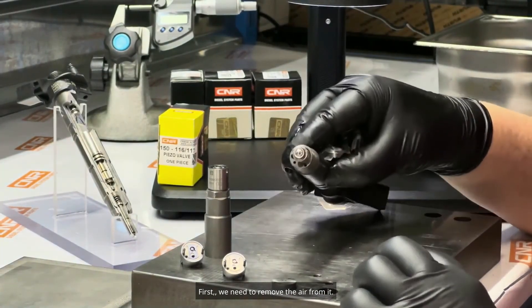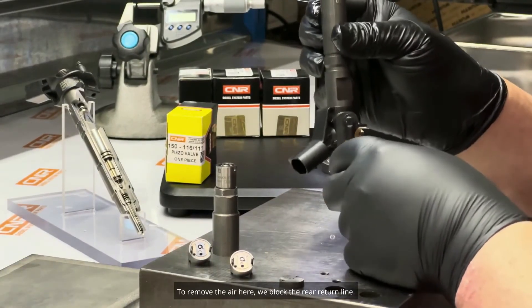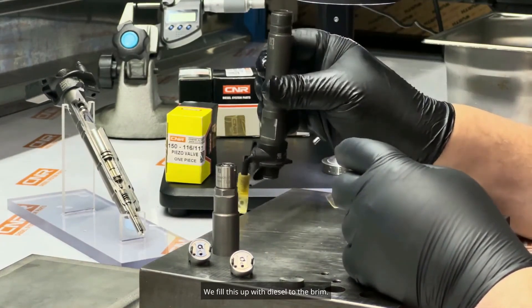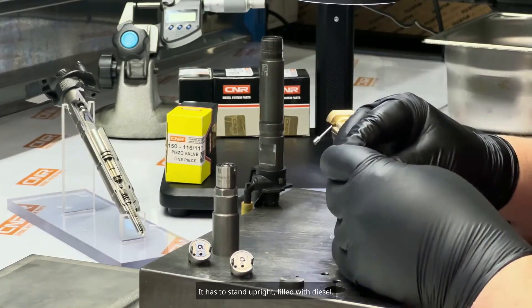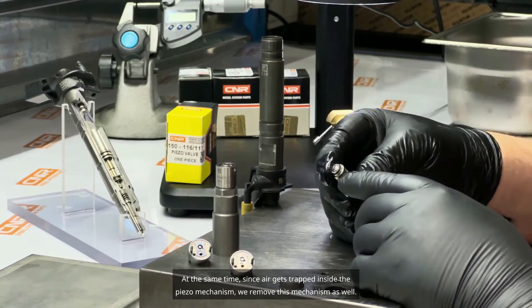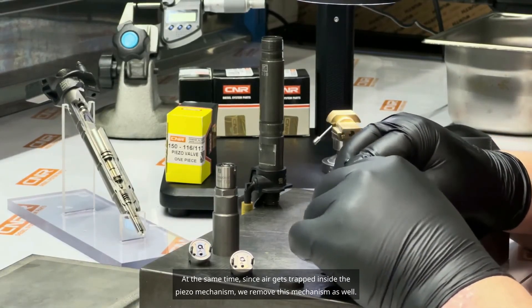First, we need to remove the air from it. To remove the air here, we block the rear return line. We fill this up with diesel to the brim. In fact, this also needs to be positioned properly. It has to stand upright, filled with diesel. At the same time, since air gets trapped inside the piezo mechanism, we remove this mechanism as well.